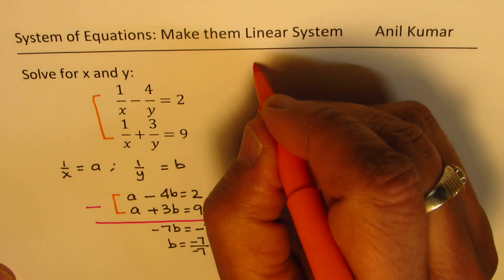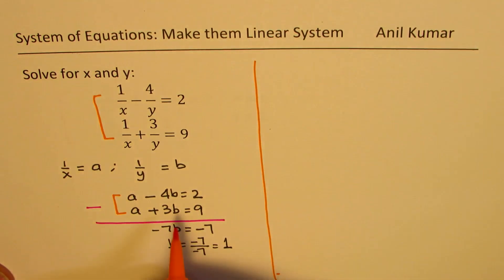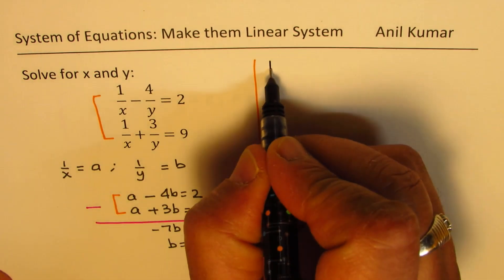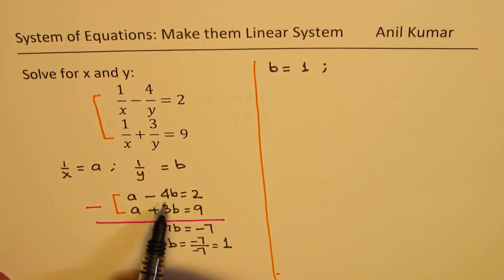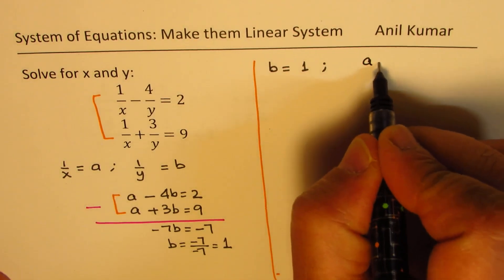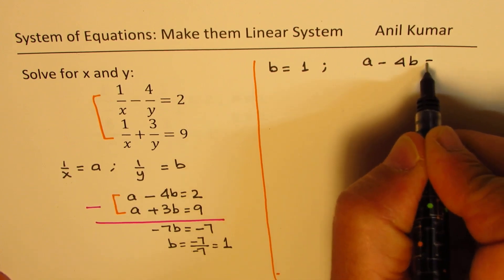So once we get the value of b, we can always find the value of a by substituting it back into one of our equations. So we get b as equal to 1 and we'll substitute that in the very first equation which is a minus 4b equals 2.